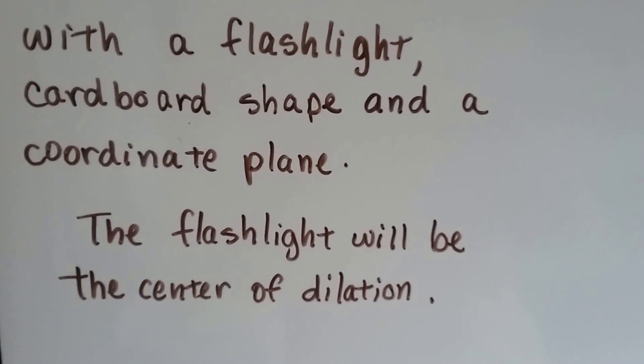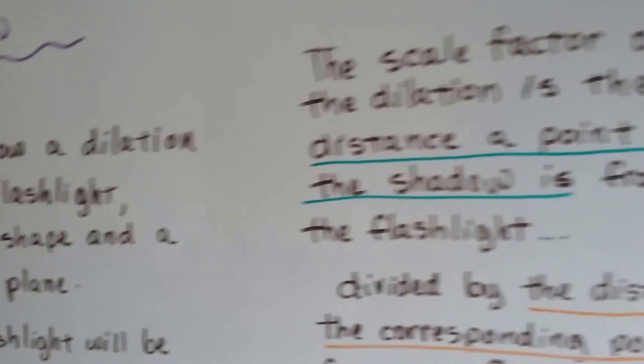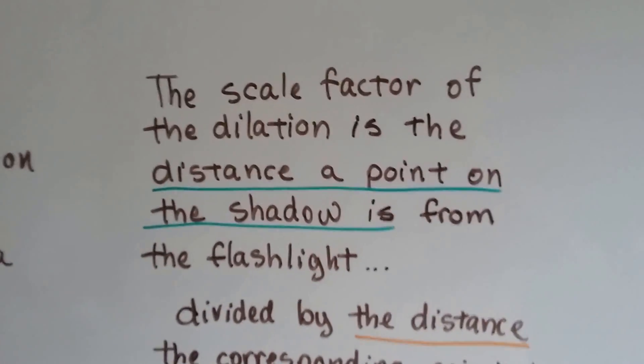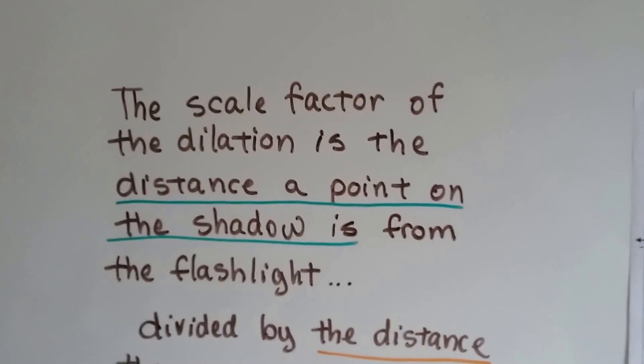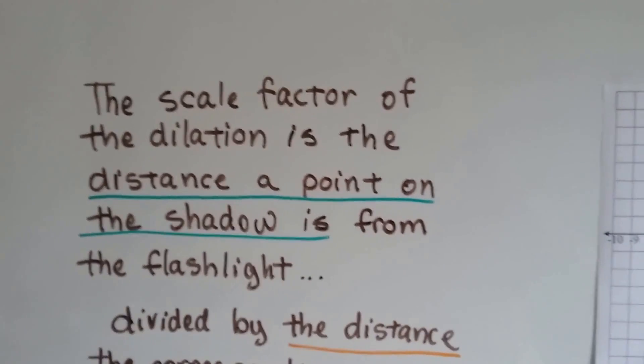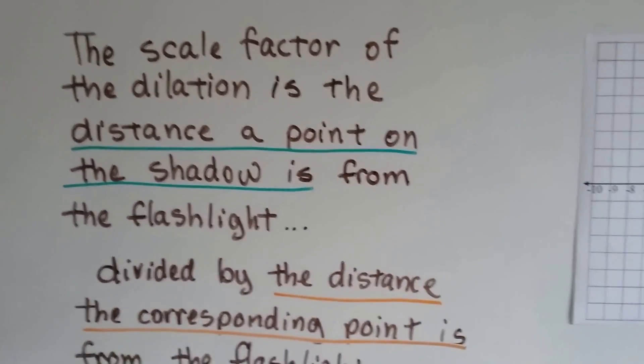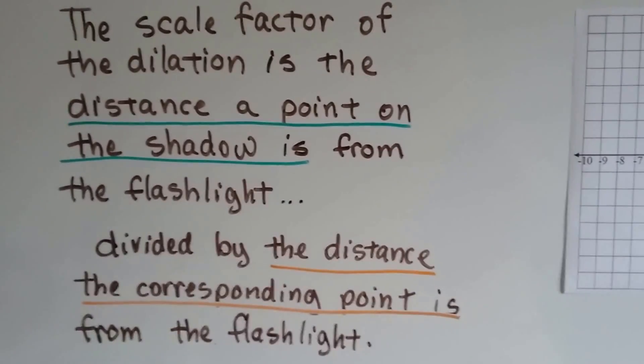The flashlight will be the center of dilation. The scale factor of the dilation is the distance a point on the shadow is from the flashlight, divided by the distance the corresponding point is from the flashlight.